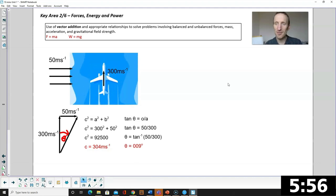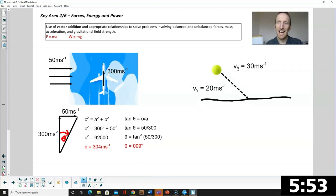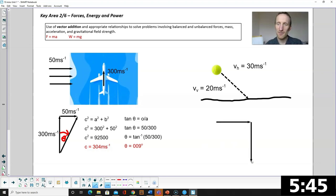Another example of vector addition might be where you have a ball that is landing and you know the final horizontal and the final vertical velocity. Again you could draw these. You would draw 30 or horizontal followed by 20 or vertical and then add them together using vector addition to find the overall final velocity.